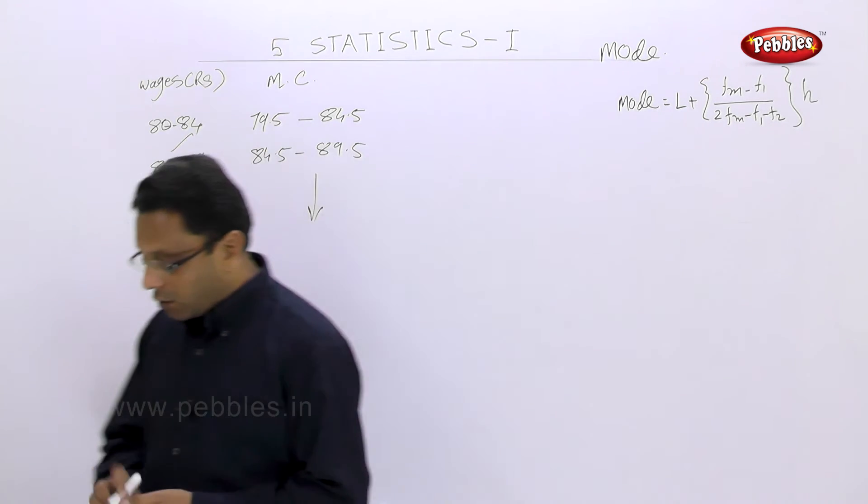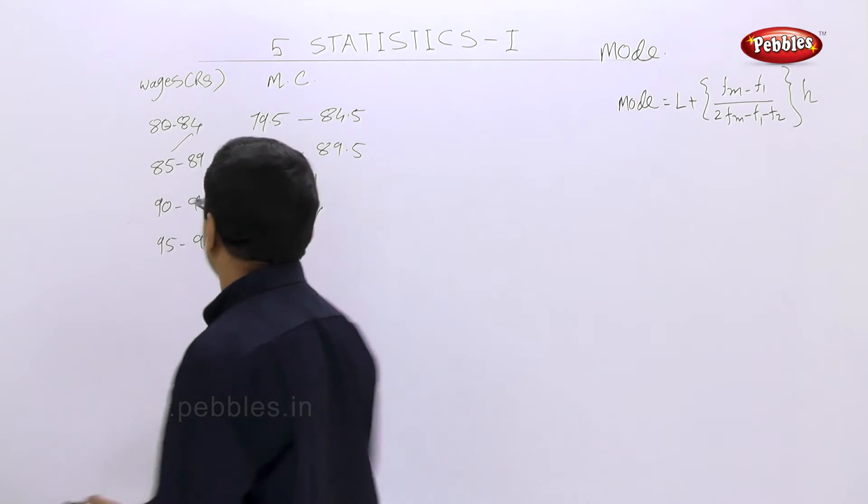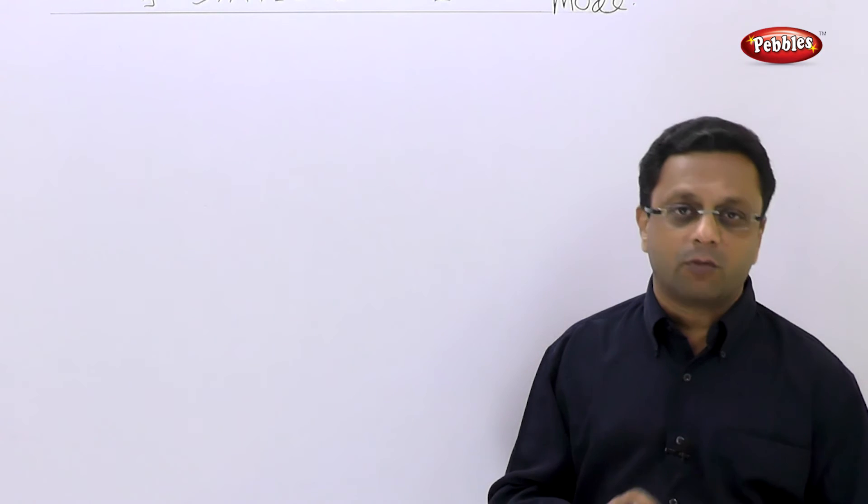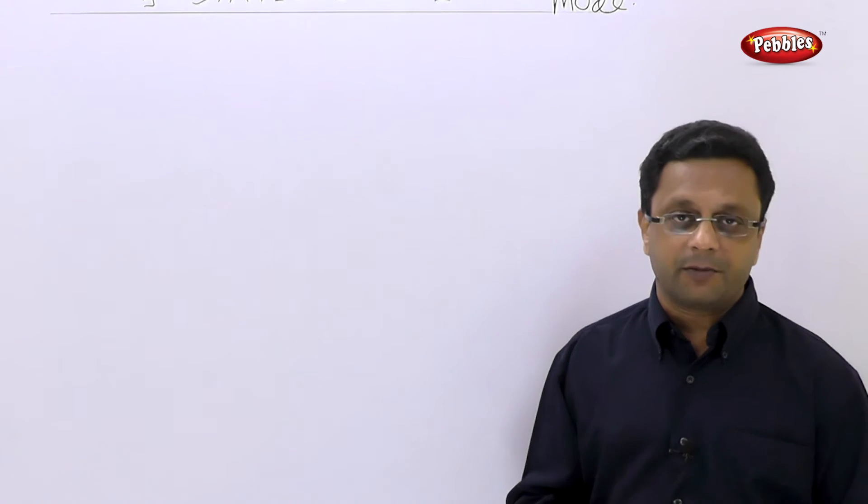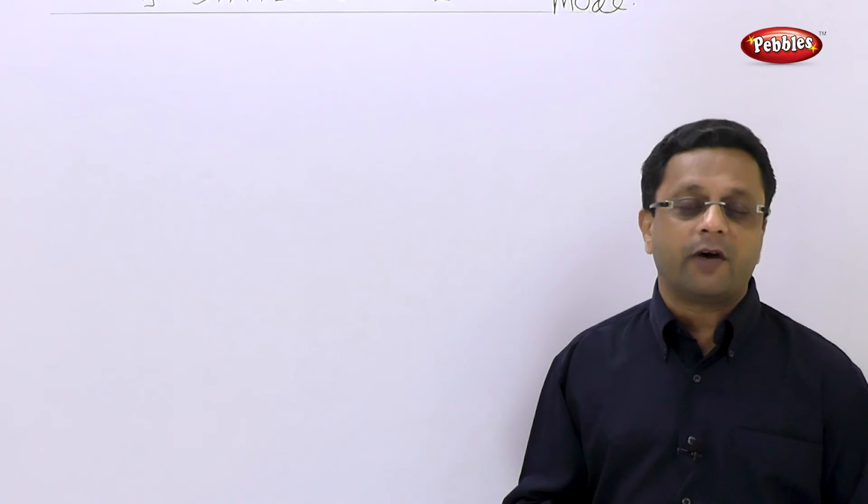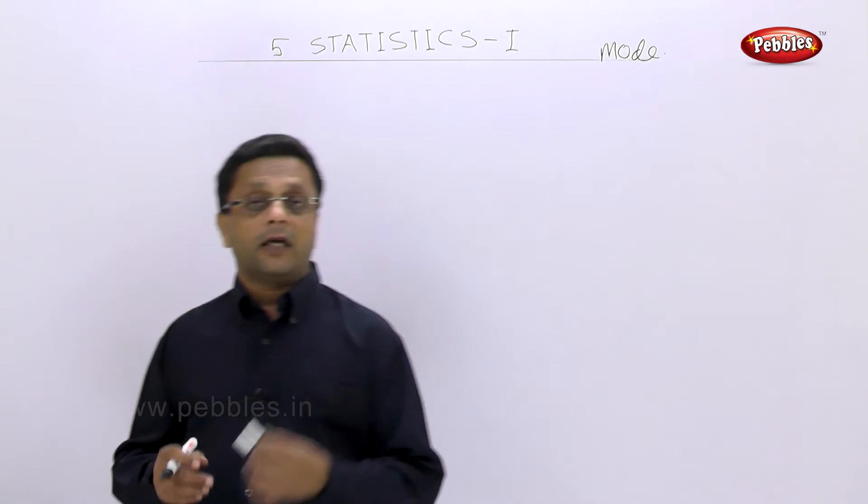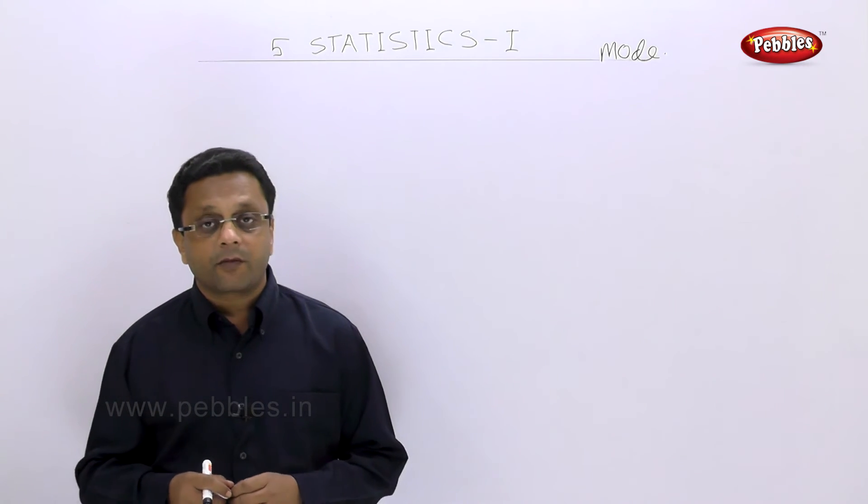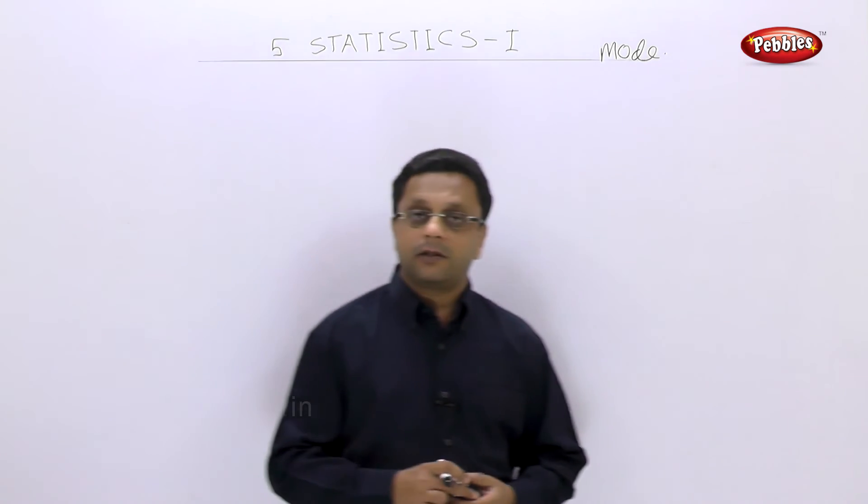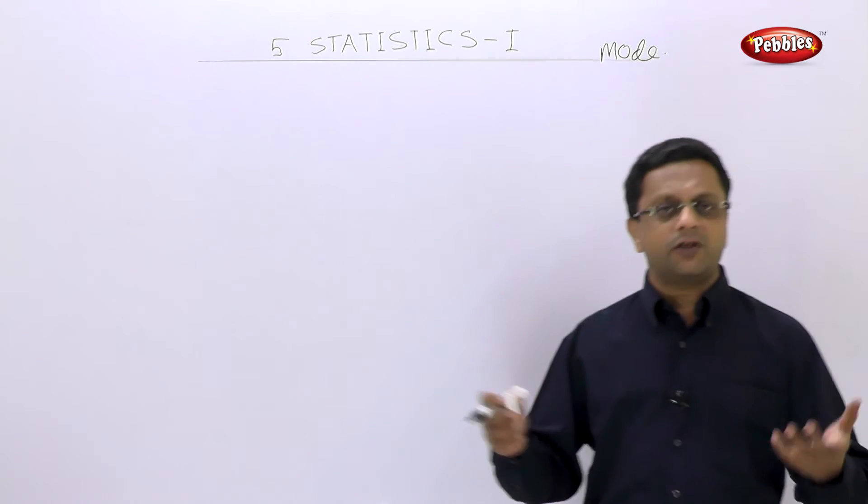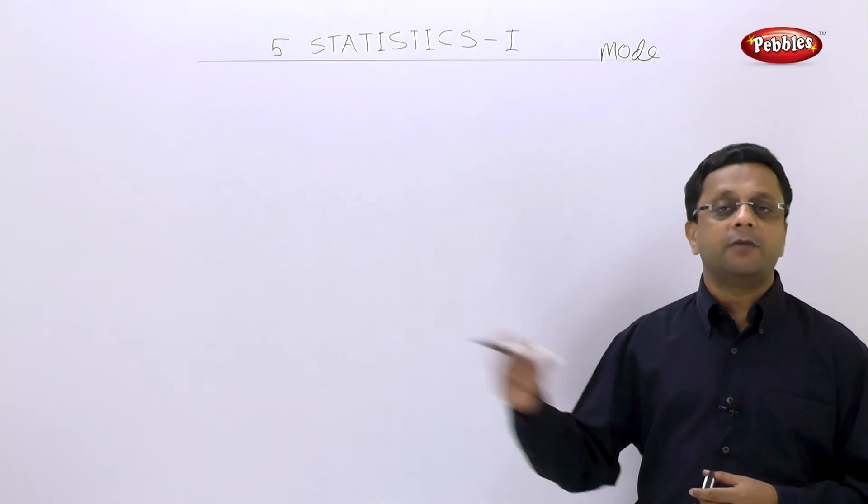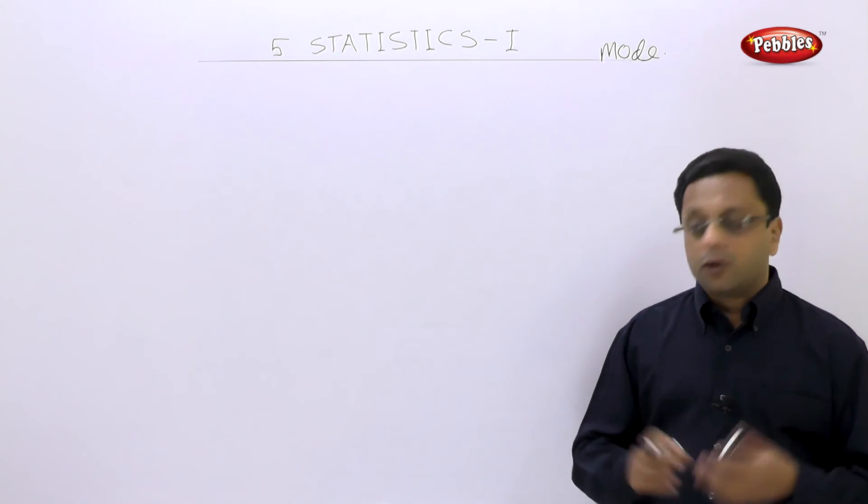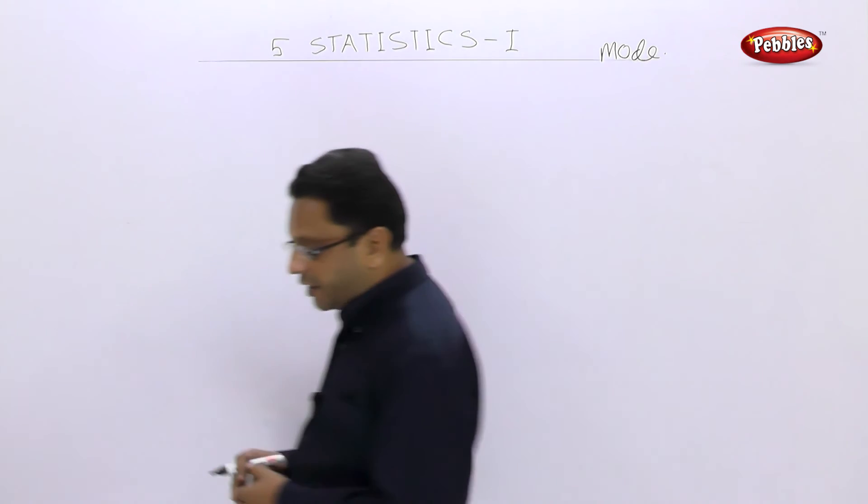You have to just substitute in the formula. I am not going to show this. We are directly going to see the merits and demerits of the modal class. So there is no need of solving more examples on mode because it is very simple. Just substitution of the values in one single formula. The only effort you have to take is find out the class with the maximum frequency. If the classes are not continuous, then first make them continuous and then proceed. Let us see what are the merits and demerits of the mode.